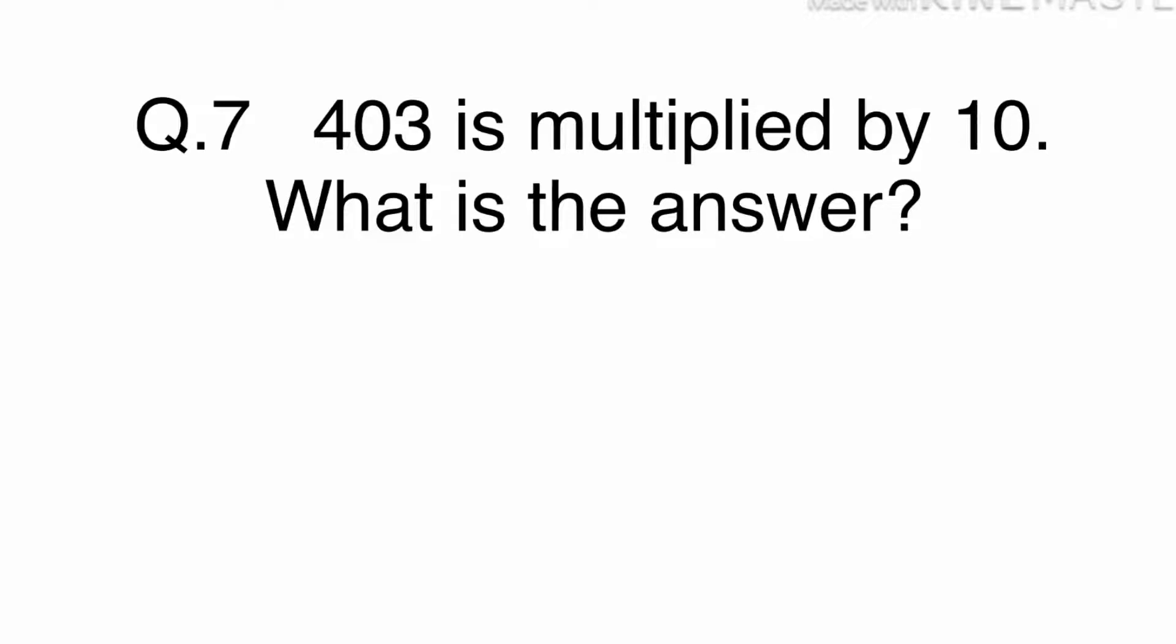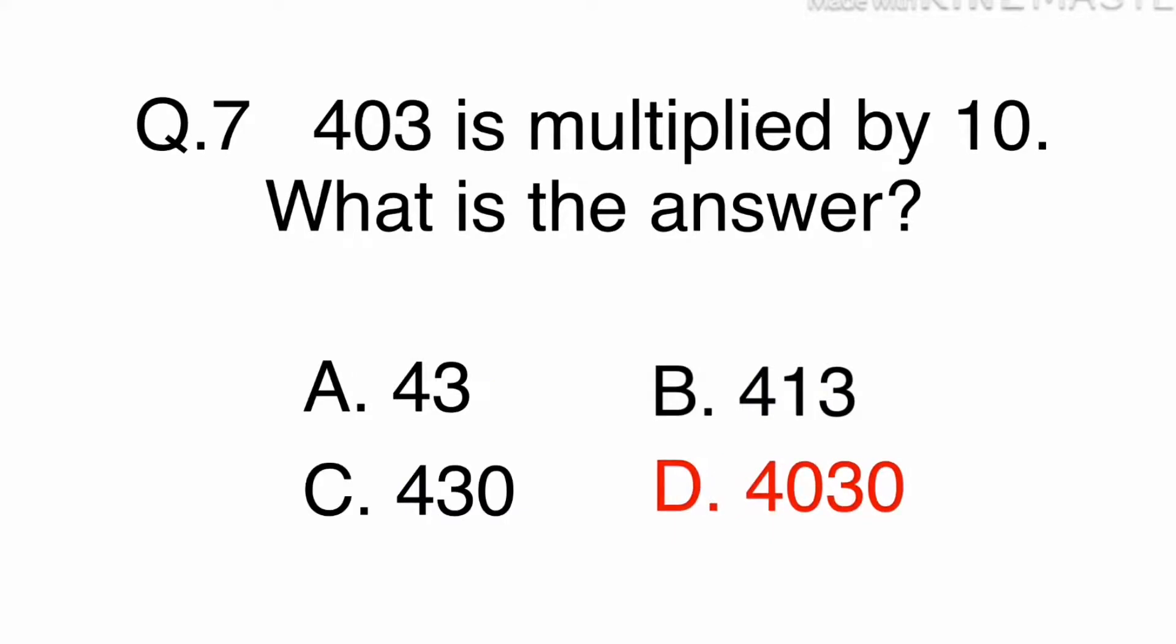Multiplying a whole number by 10 means we place a 0 on the end of a number. 403 times 10 equals 4030. The answer is D. 4030.